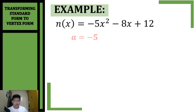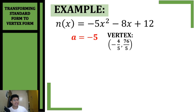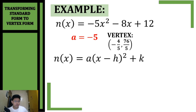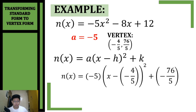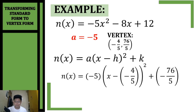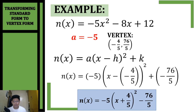Now that we have our vertex, we write our vertex form using a = negative 5 and our vertex. Substituting: negative 5 times (x minus negative 4/5)² plus 76/5. Simplifying — negative times negative is positive, positive times negative is negative — our vertex form is f(x) = negative 5 times (x + 4/5)² minus 76/5.